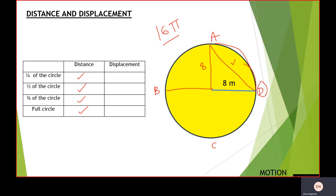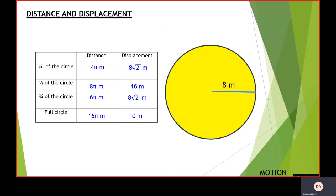For half of the circle, the initial position is D and the final position is B. Connecting both points, each radius is 8 meters, giving a total displacement of 16 meters. Remember not to forget units — forgetting units costs marks. For three-quarters of the circle, connecting the initial and final points similarly gives a hypotenuse with both legs equal to 8 meters. For the full circle, the person returns to position D, so since the initial and final positions are the same, the displacement is 0 meters.